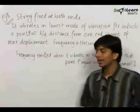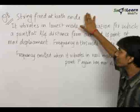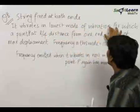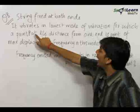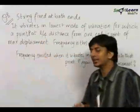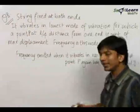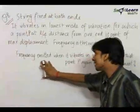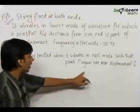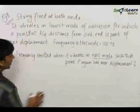The 8th question is very interesting and important. We have a string fixed at both ends. It vibrates in the lowest mode of vibration for which a point P at L/4 distance from one end is a point of maximum displacement — that is, it is an antinode. The frequency in this mode is 100 Hz. We need to find the frequency emitted when it vibrates in the next mode such that point P again has maximum displacement.